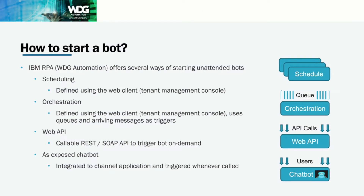It's also good to think about the different ways we can trigger and run our developed automations. Scheduling is the most obvious one — you can define schedules that trigger different bots during the day. We also support what we call orchestrations, which are definitions that make use of message queues to trigger and intelligently distribute the load between the different runtime environments available for bot execution.